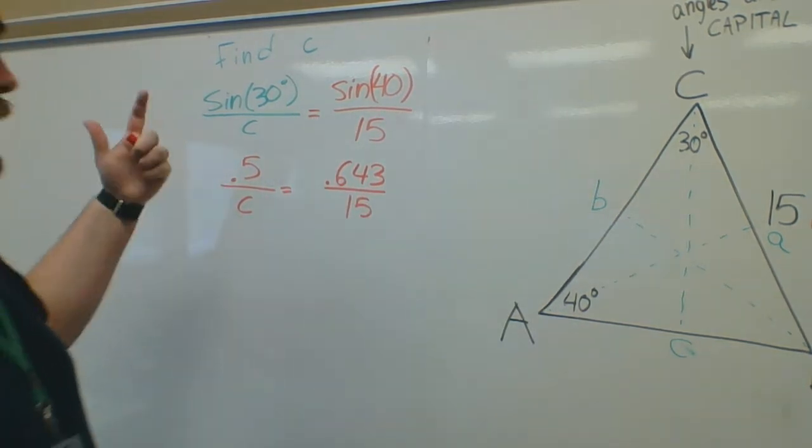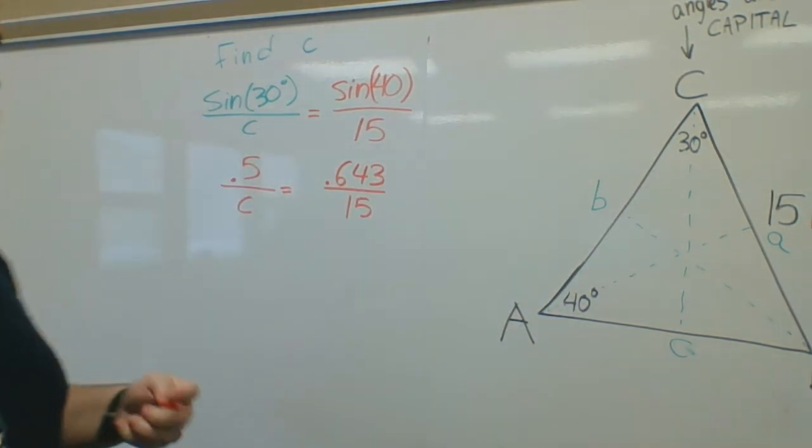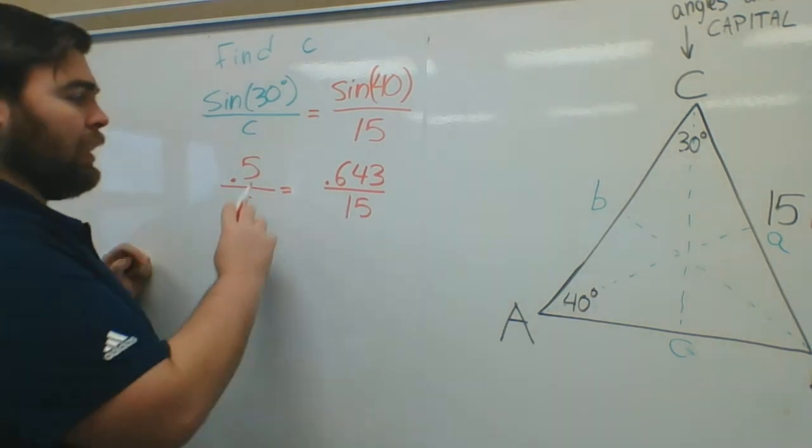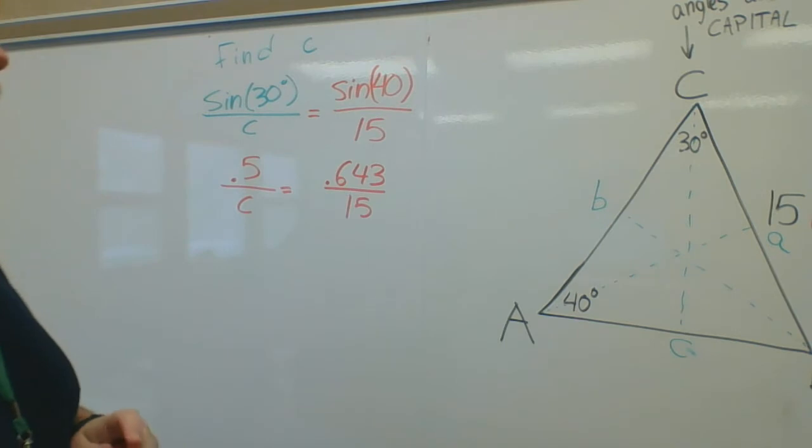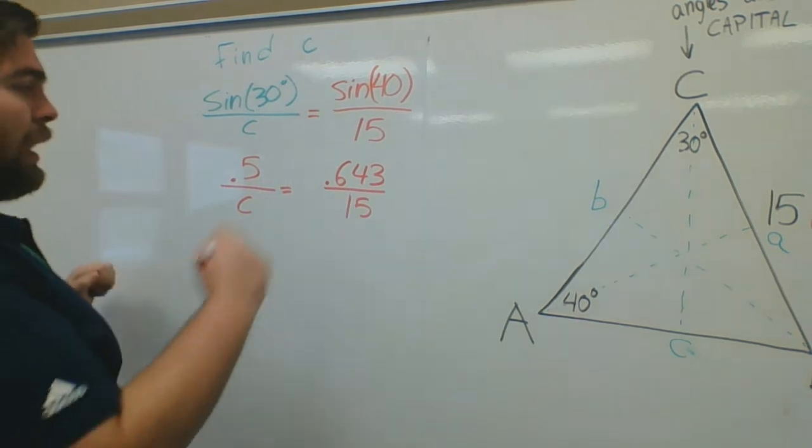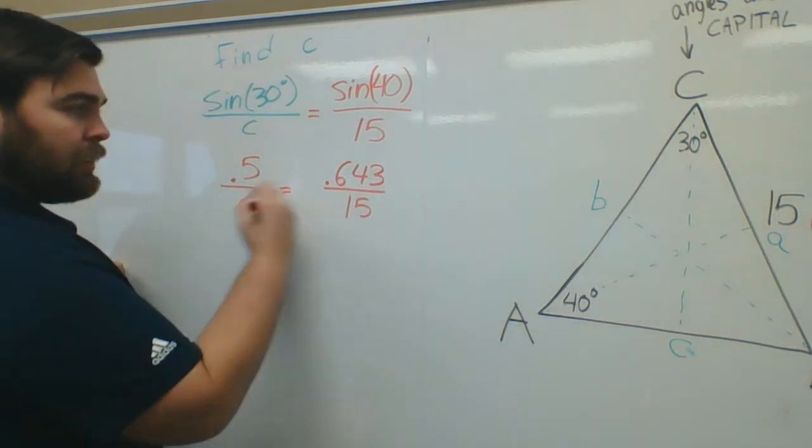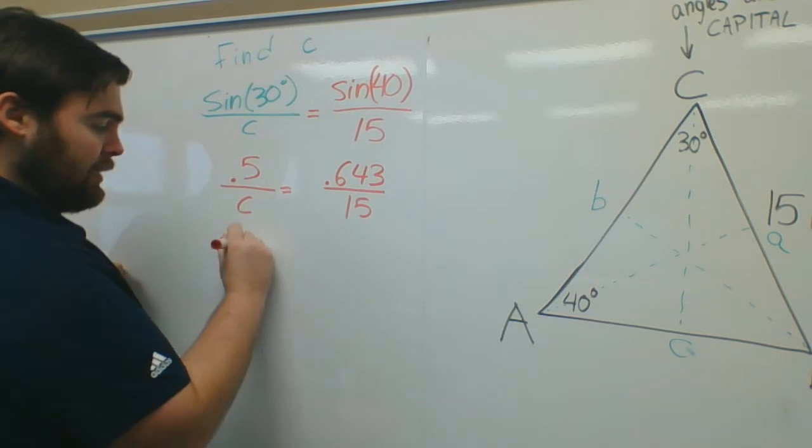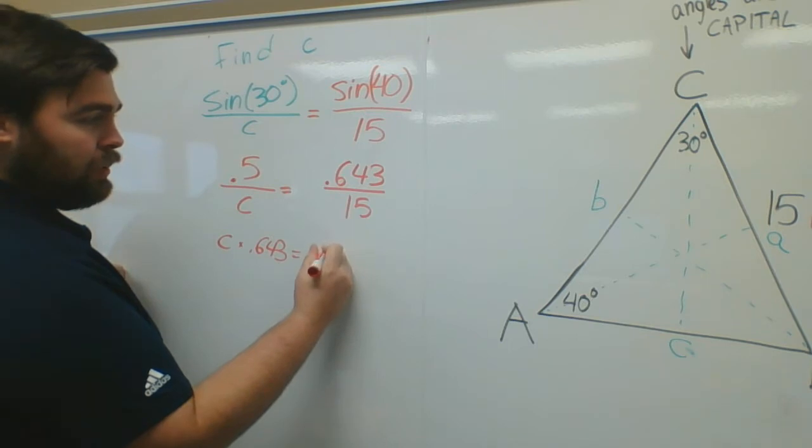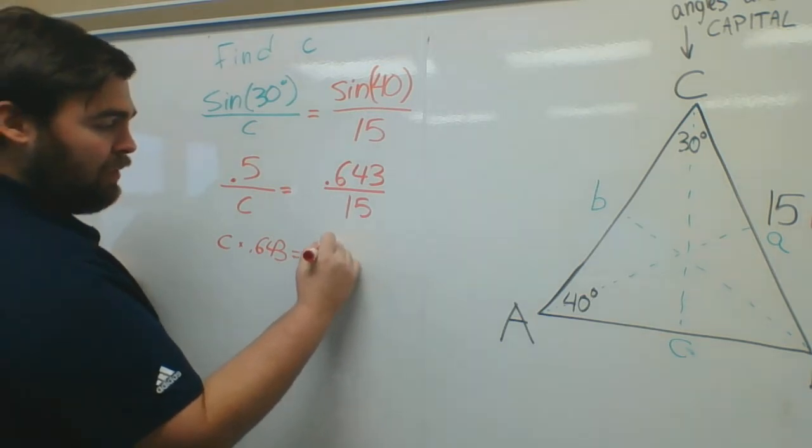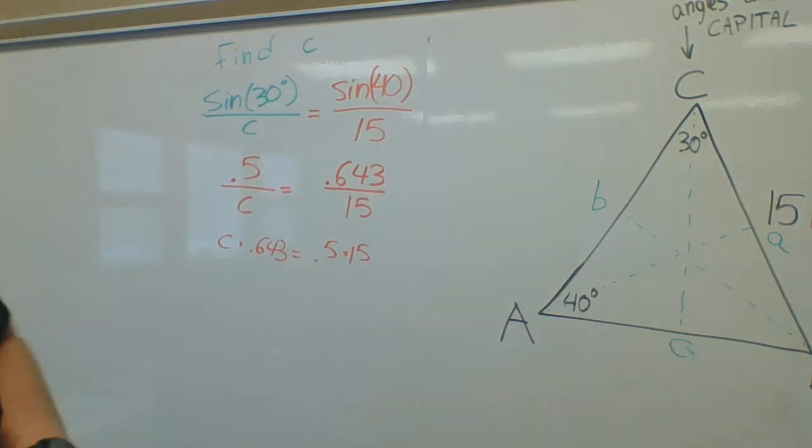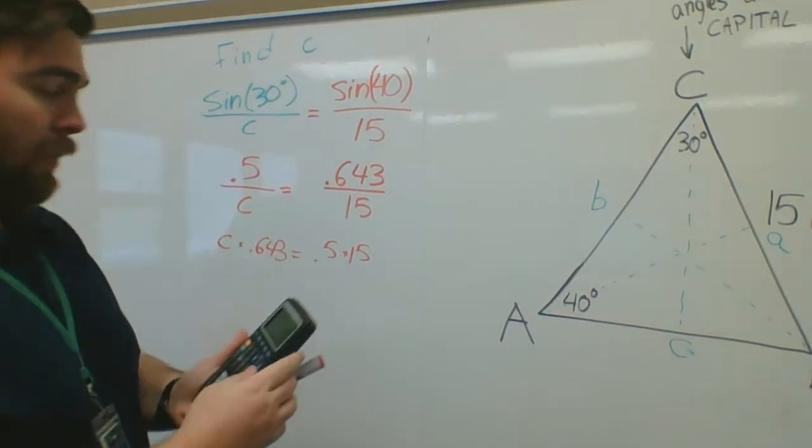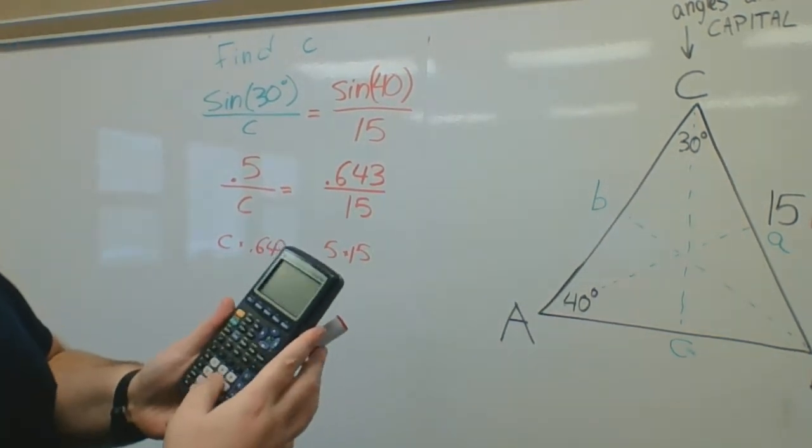From here, I have a fraction equal to a fraction. I can cross multiply. I can just do times C, divide that over, whatever you want. But I'm going to cross multiply. So basically, I'm going to have C times 0.643 is equal to 0.5 times 15.